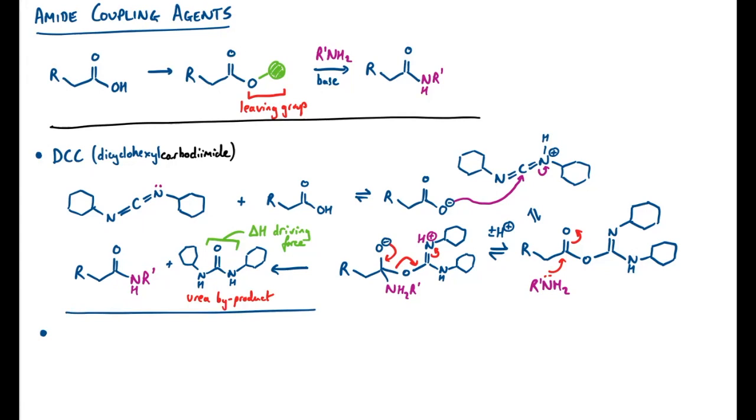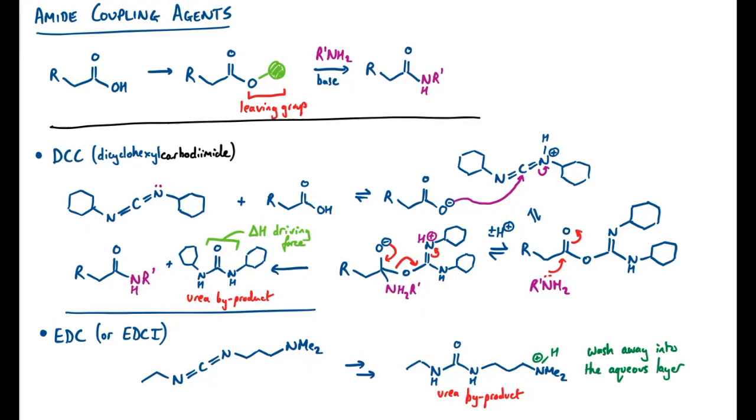This led to the development of a slightly modified reagent called EDC, or sometimes called EDCI. I'm going to give up on the long-form names of these, because they're going to get quite complicated, but it has a very similar structure in that it has this diamide component in the middle, except it has different side chains. One of the main benefits comes in purification, because it turns out that the urea by-product of this one can be washed away using a separating funnel in mild acid. So that's a massive advantage for this particular reagent.